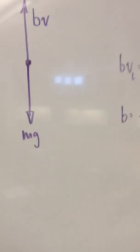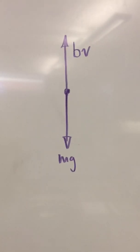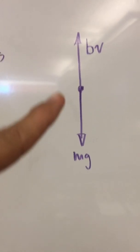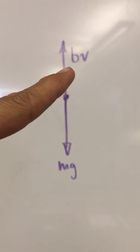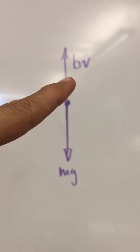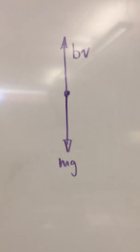Once the object gets to the point where it reaches its terminal velocity, then the downward pull of gravity and the upward force of air resistance here represented by bv, where b represents something called the drag coefficient and v represents how fast it's going.